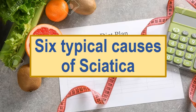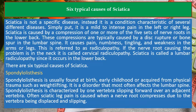6 Typical Causes of Sciatica. Sciatica is not a specific disease; instead it is a condition characteristic of several different diseases. Simply put, it is a mild to intense pain in the left or right leg. Sciatica is caused by a compression of one or more of the five sets of nerve roots in the lower back. These compressions are typically caused by a disc rupture or bone spur in the lumbar spine.